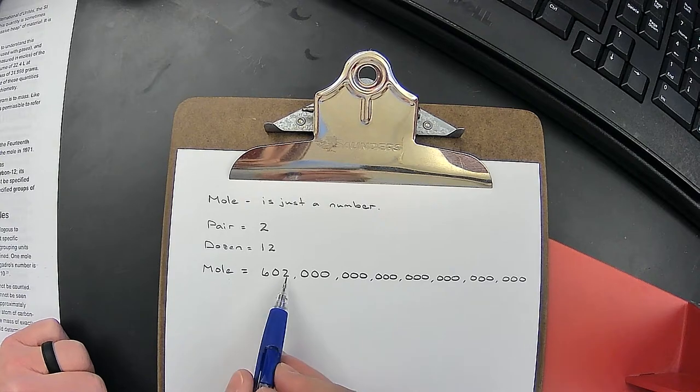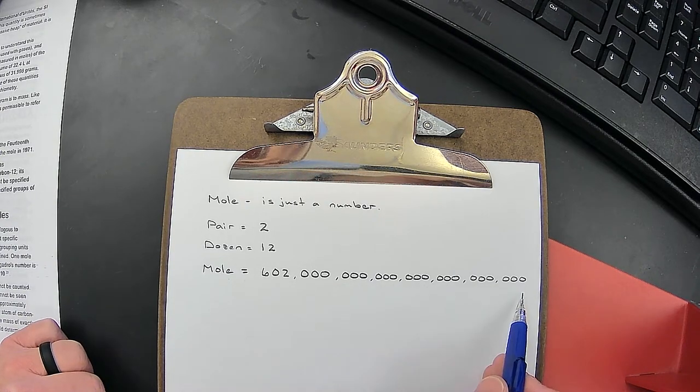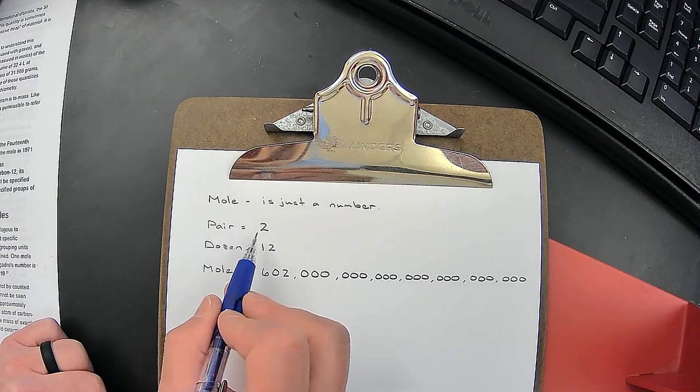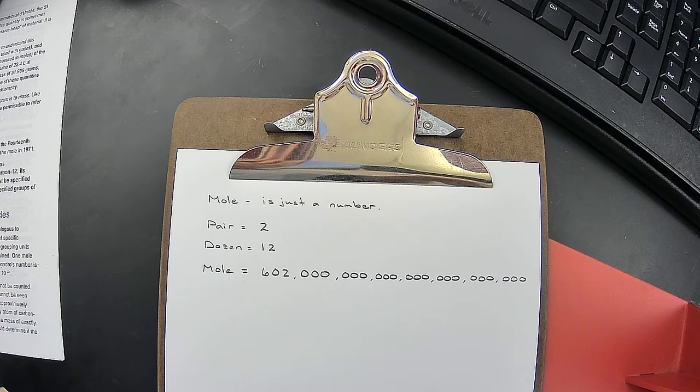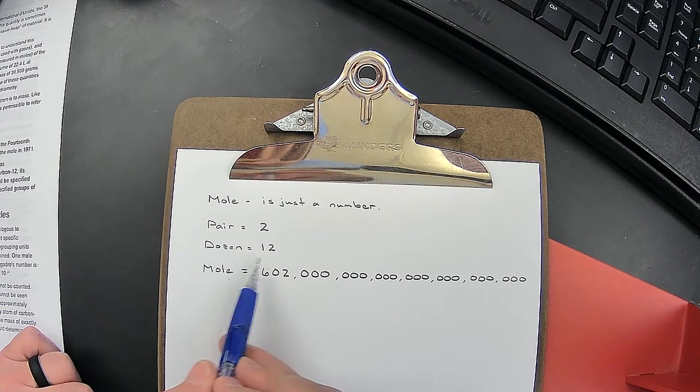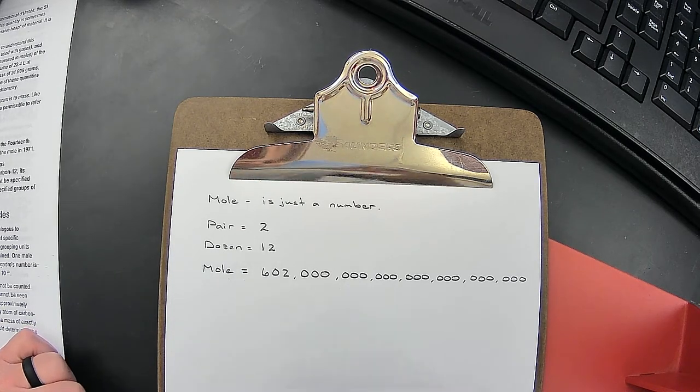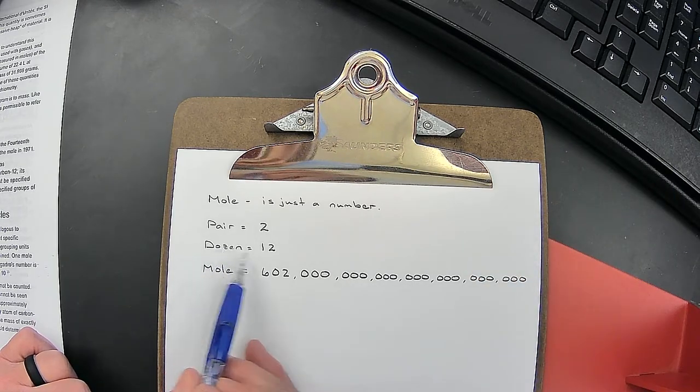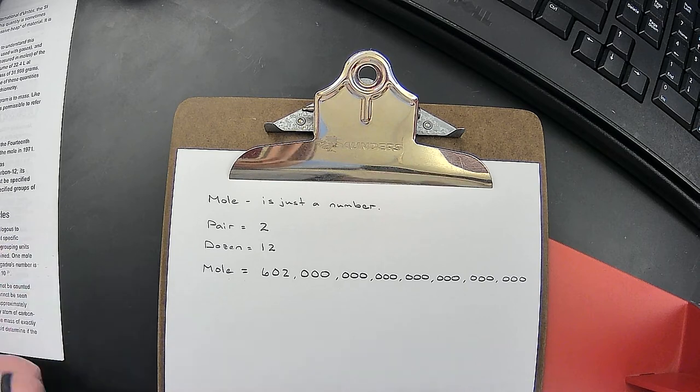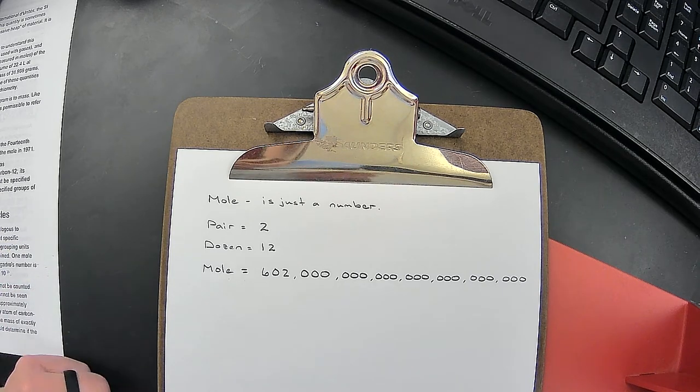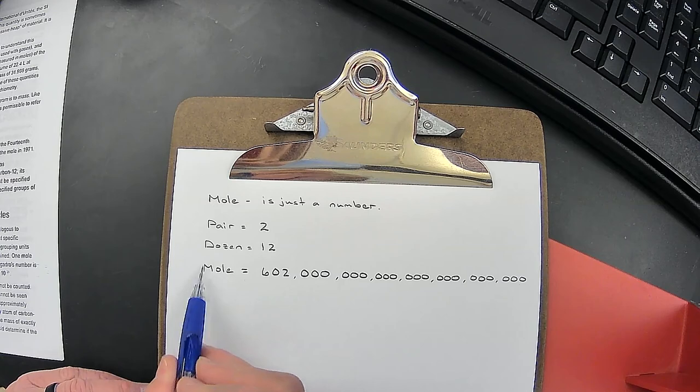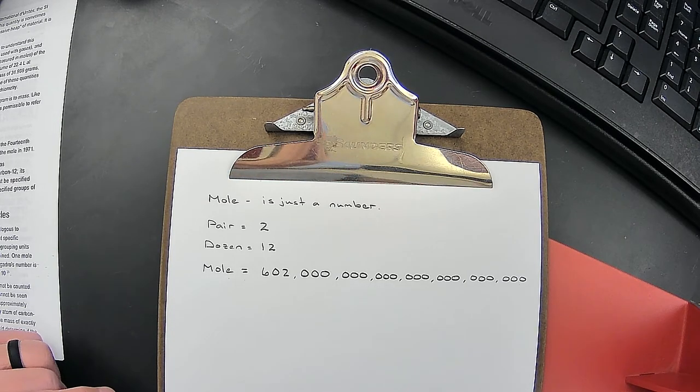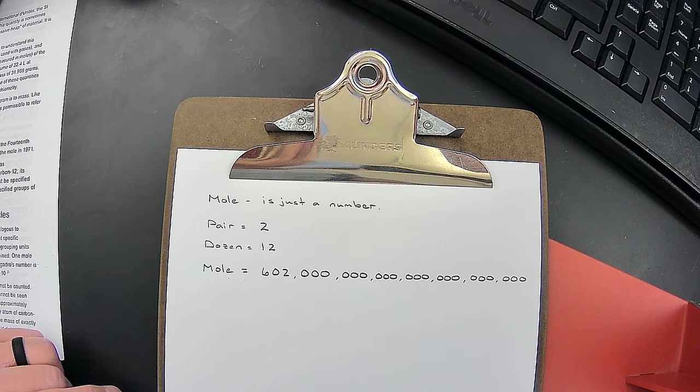There's historical significance on why it's 602 billion trillion, just like there's historical significance on why a pair stands for two - probably because we have two feet so you get a pair of shoes. Why a dozen stands for twelve - maybe twelve donuts fit perfectly in that box. I know there's historical significance behind a mole being 602 billion trillion.